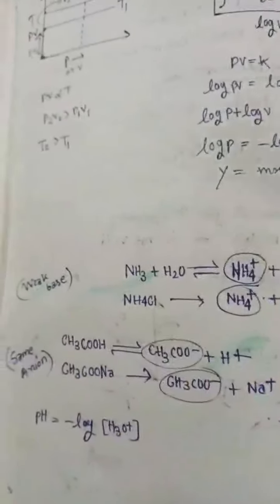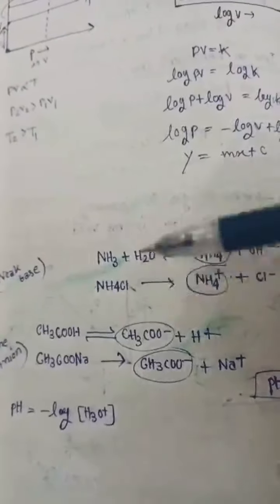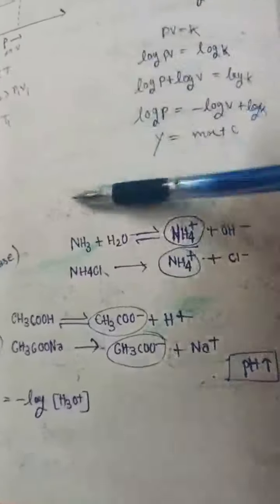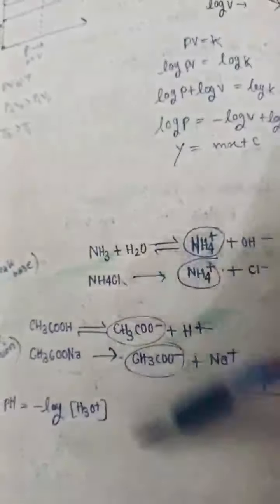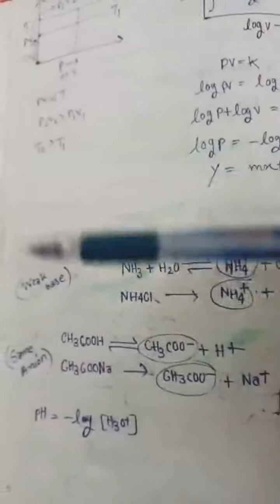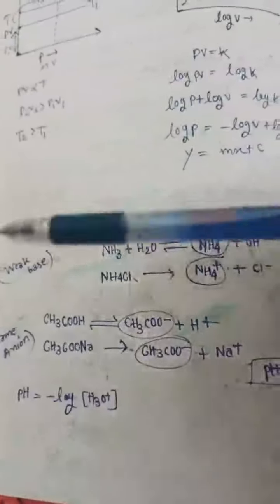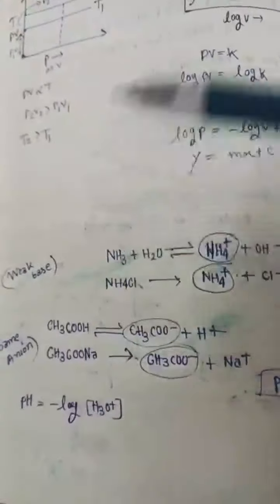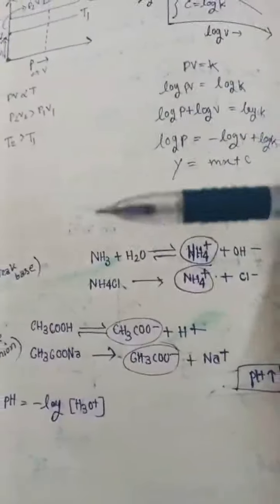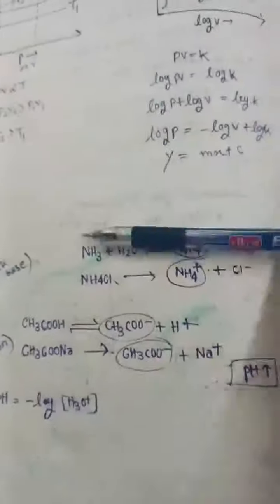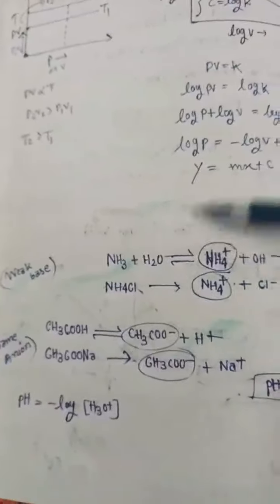Same আরেকটা example — acetic acid যদি আমি dissociation করি তাহলে acetate ion তৈরি হবে। এবং এই acetate ion টা common ion effect এর জন্য CH3COOH এর dissociation টাকে কমাবে — অর্থাৎ alpha কমবে।